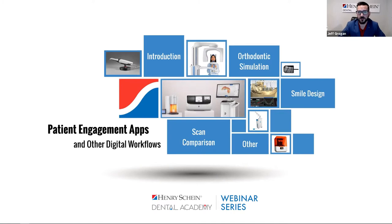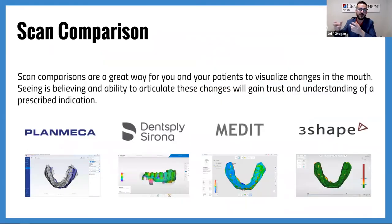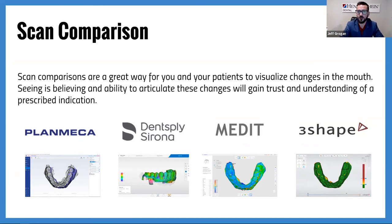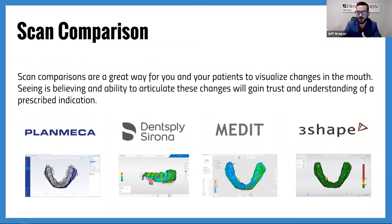Next stop is scan comparison. Scan comparison tools are used to look at different points in time and educate patients: 'this was you then, this is you now, these are the changes.' It can be really powerful for bruxism, gingival recession, or the progression or regression of orthodontics. These tools paint a good picture of two different points in time and the variance, allowing you to prescribe the appropriate treatment. For example: 'Look how much you've ground your teeth down over the last year — maybe you should get an occlusal guard.' Being able to show the patient the actual changes increases case acceptance based on your diagnostic.